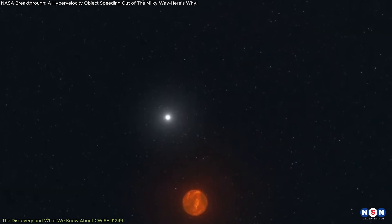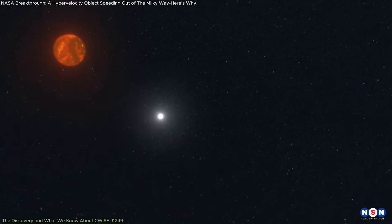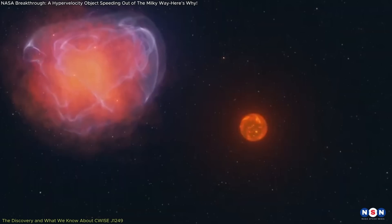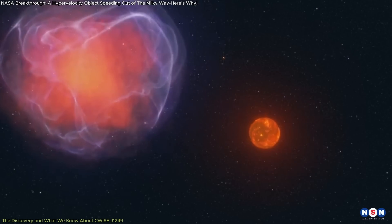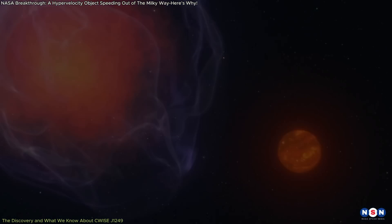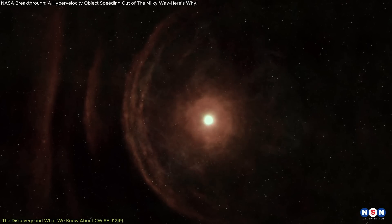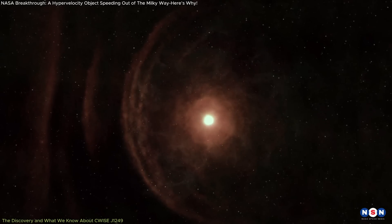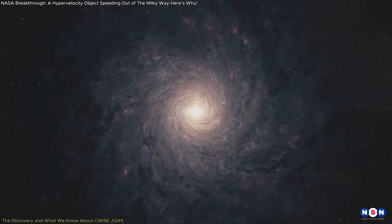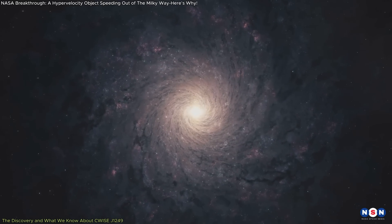The unusual speed and trajectory of this object suggest that it was ejected from a larger system through some form of explosive event, likely a supernova or a close encounter with a binary black hole system. Observations of its chemical composition further indicate that this object might be ancient, originating from one of the first generations of stars in the Milky Way, which is truly fascinating.